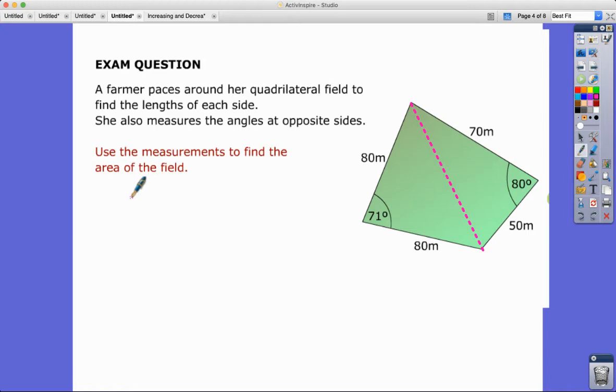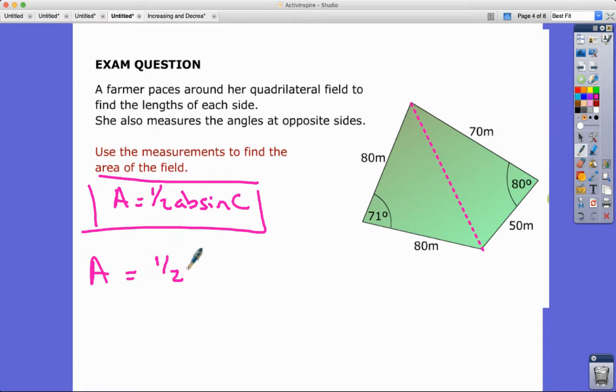Therefore I can use what I know. Area is half AB sine C—the more we write it out, the more we remember it. In this case, the area of the whole thing is going to be half, first of all 80 times 80 sine 71, plus for this triangle half 70 times 50 sine 80.